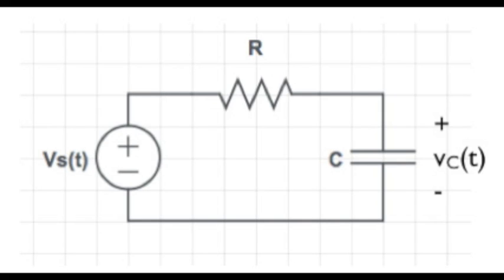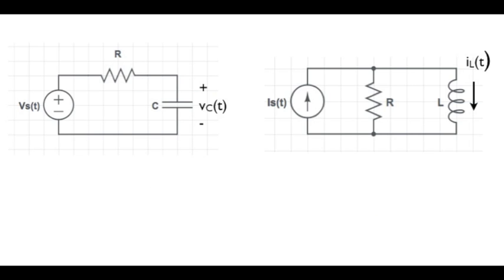The title of this ECE 201 lesson is 'How to Solve for State Variables in RL and RC Circuits with Step Function Sources.' We've previously looked at circuits where a capacitor is connected to a circuit represented by a Thevenin equivalent with a time-varying voltage source, and also at the response of the inductor current to a circuit represented by a Norton equivalent with a current source that has some general time variation.